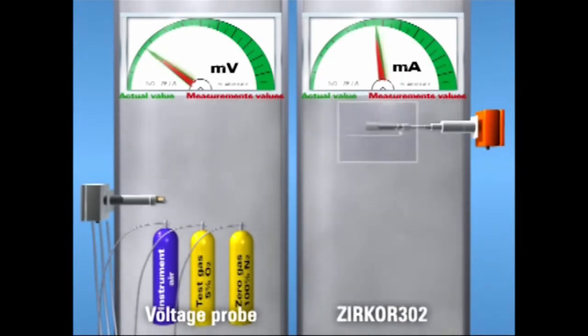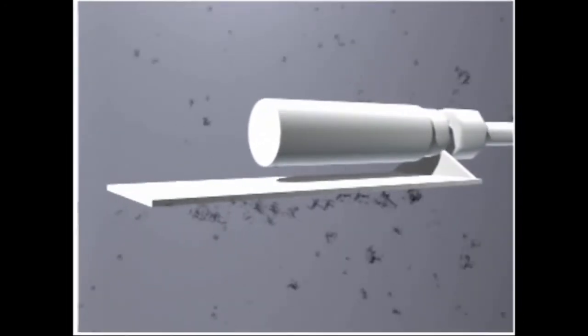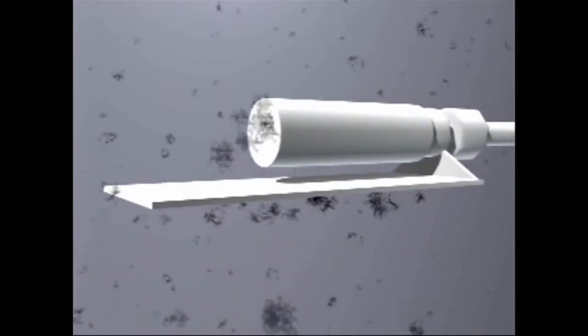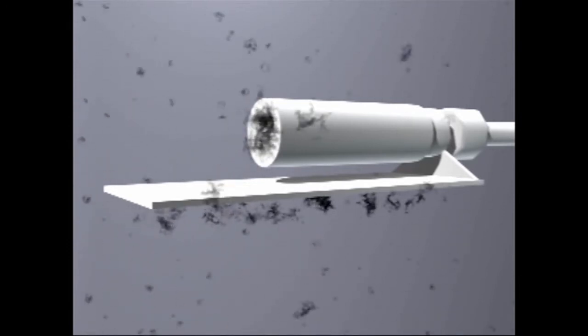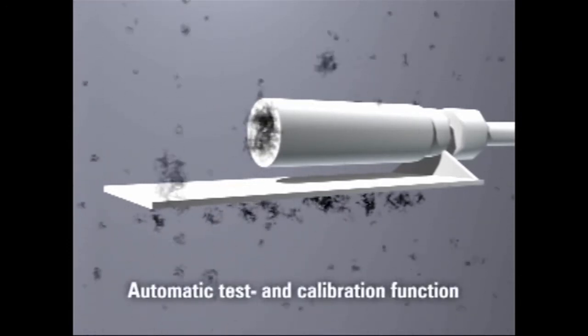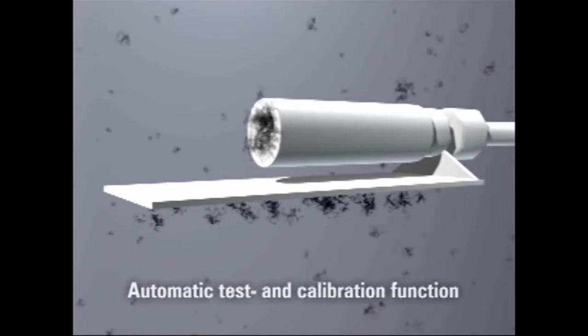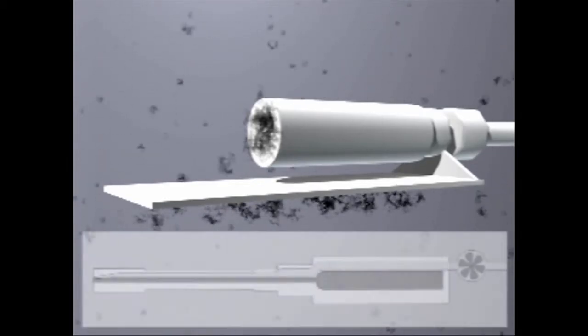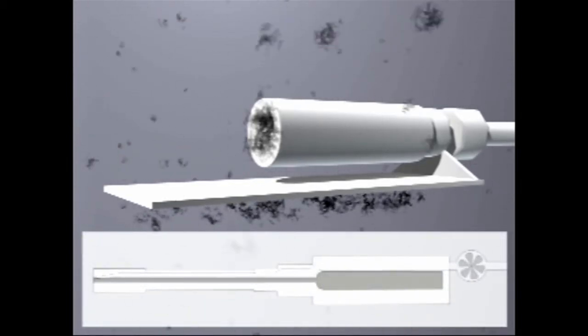The check function and calibration of the Circor 302 are fully automatic and use ambient air only. Any equipment required for this task has been integrated in the device. There are no extra costs for field service personnel and test gases.